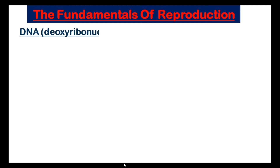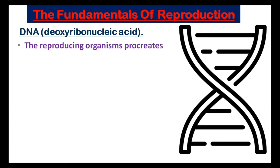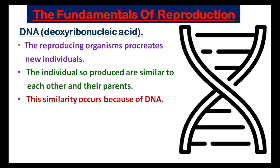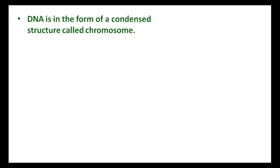The basic event in reproduction is the creation of a DNA copy. DNA stands for deoxyribonucleic acid. The reproducing organism procreates new individuals who are similar to each other and their parents — this similarity occurs because of DNA. DNA is the blueprint of all basic body designs of organisms, and it is present in the nucleus of a cell in the form of condensed structures called chromosomes.